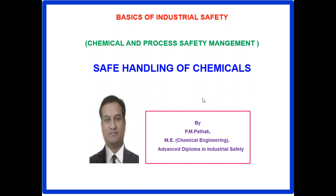Welcome to this series of industrial safety lectures on chemical and process safety management. In this session, we are going to discuss the safe handling of chemicals. In previous sessions, we discussed different classifications of chemicals including UN classification, Material Safety Data Sheets (MSDS), and chemical compatibility — whether one chemical is compatible with another depending on their properties and reactivity.